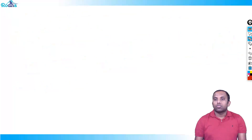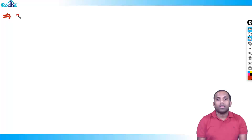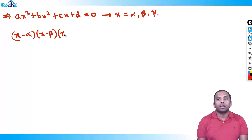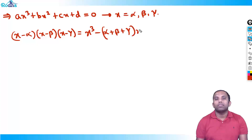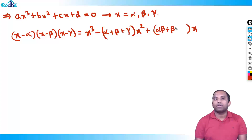Now, back to the cubic equation: ax³ + bx² + cx + d = 0 with roots α, β, γ. So (x−α)(x−β)(x−γ) are the factors, giving x³ − (α+β+γ)x² + (αβ+βγ+γα)x − αβγ = 0. The second term is always the sum of roots taken one at a time for any power.